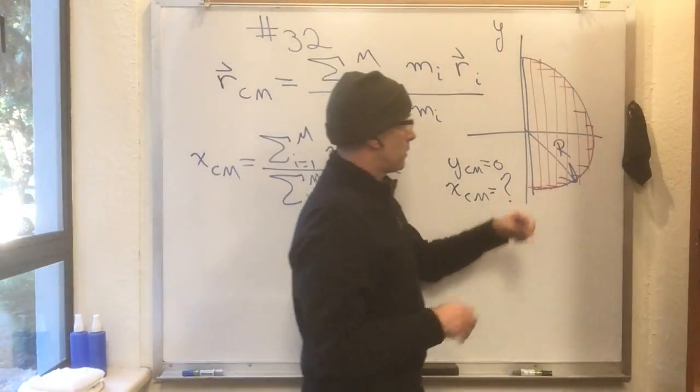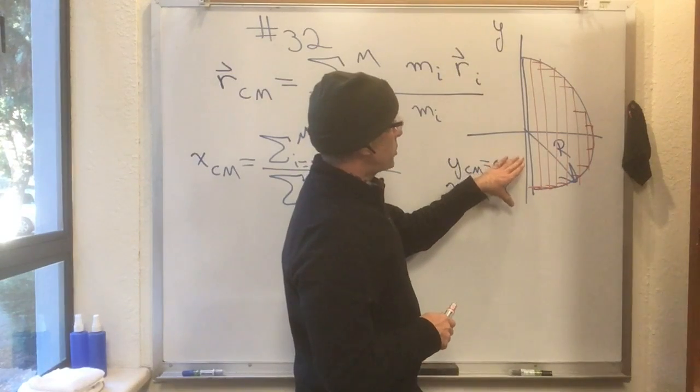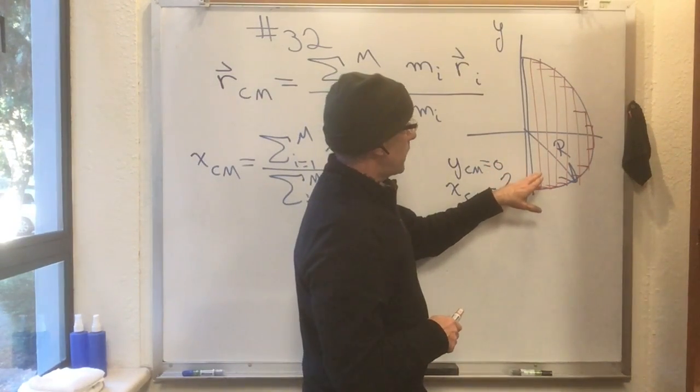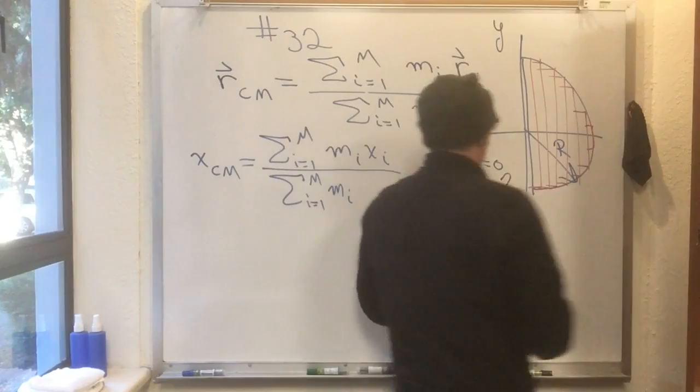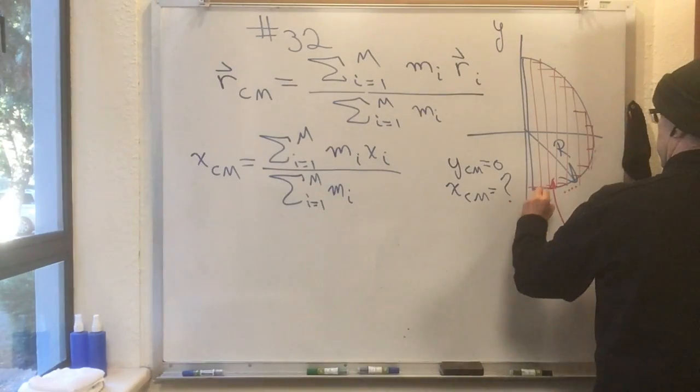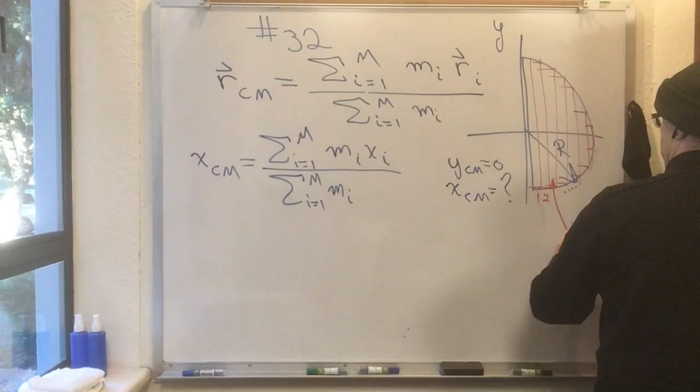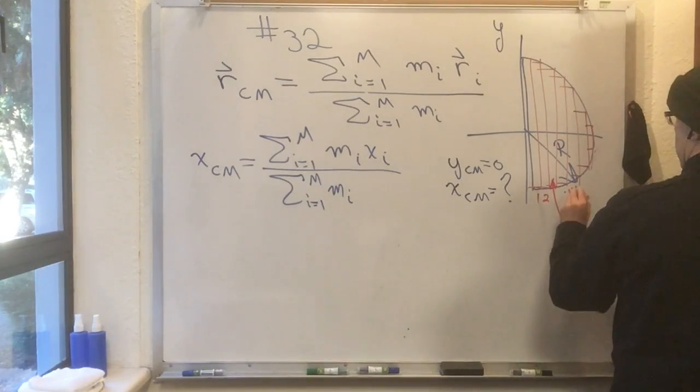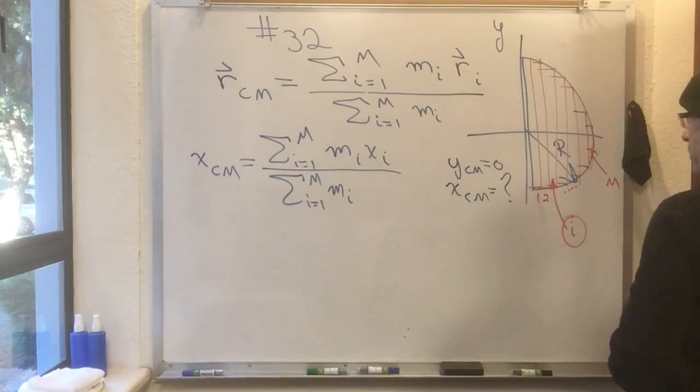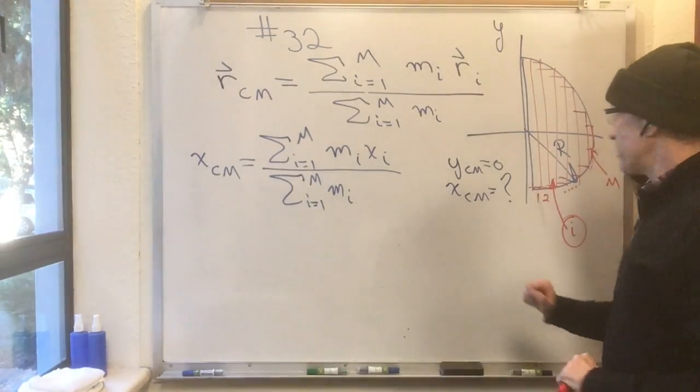Now, what I've done over here is, I've chopped the plate, the half plate here, up into a bunch of strips. Let's call this the first strip, and the second strip, and then we'll call this the i-th strip, dot dot dot, and then that one there will be the m-th strip. Now, why did I chop this plate up into strips?